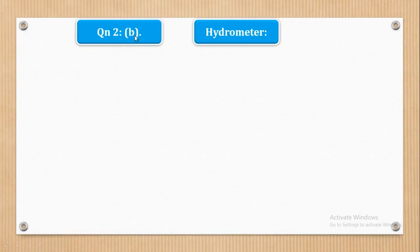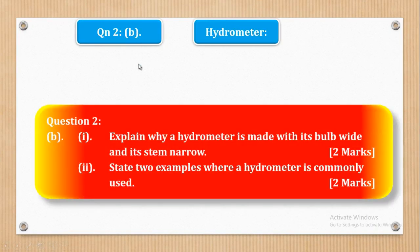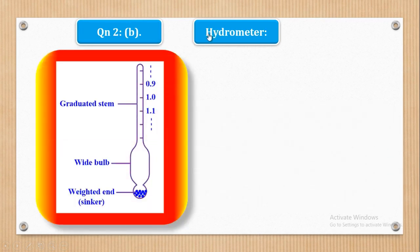Now we go to part B. Roman 1 asks: explain why a hydrometer is made with its bulb wide and its stem narrow. Roman 2 asks for two examples where a hydrometer is commonly used. A hydrometer has a narrow stem — a graduated glass tube — and a wide bulb, and they want us to explain why.